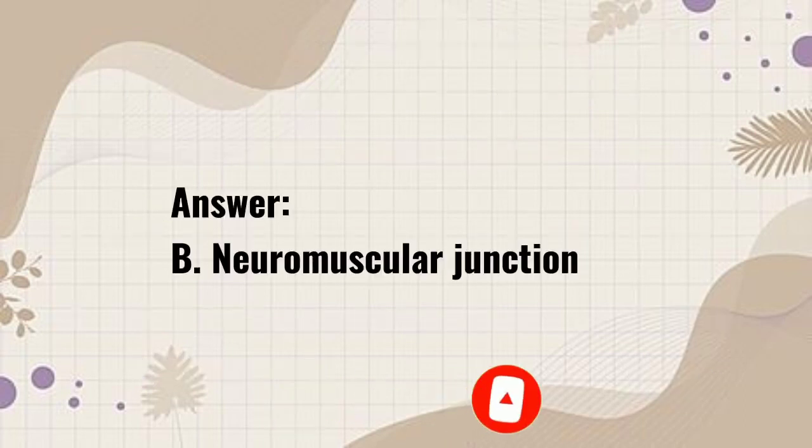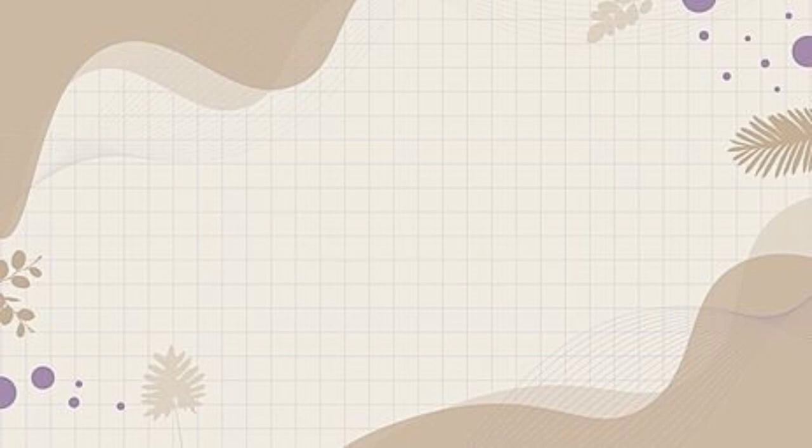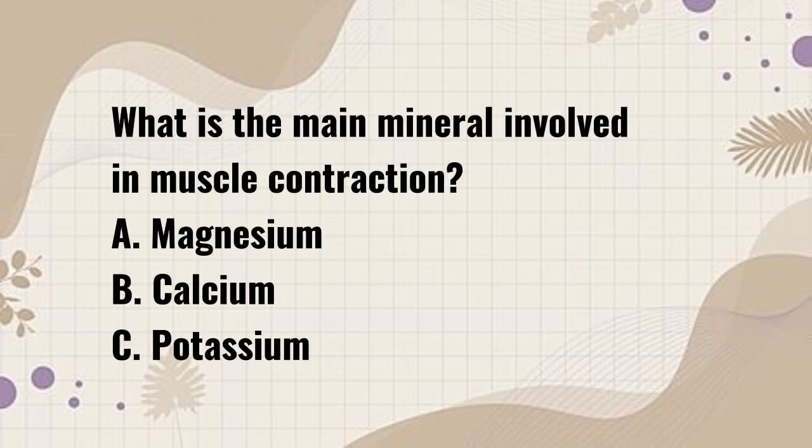Answer: B. Neuromuscular junction. What is the main mineral involved in muscle contraction? A. Magnesium. B. Calcium. C. Potassium.